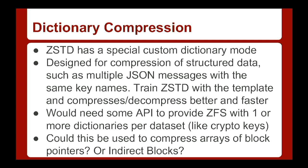The dictionary compression mode — designed to compress JSON messages — led to a question from Matt: could we use this to compress the array of block pointers or the indirect blocks? If you remember from Sarah's presentation yesterday, you get an indirect block with like 1,000 block pointers, and all of those have the same structure. If we could use the dictionary to compress those, we could make those blocks smaller — not just saving storage space, but especially when metadata is in RAM, caching more indirect blocks would improve overall ZFS performance.